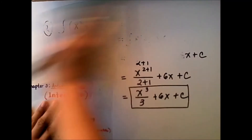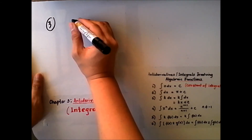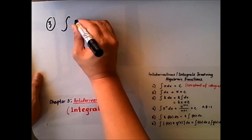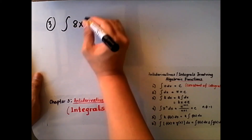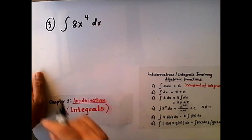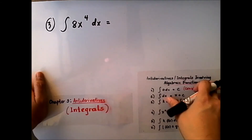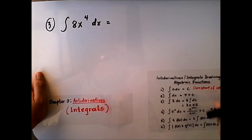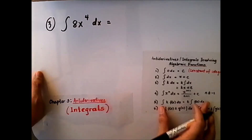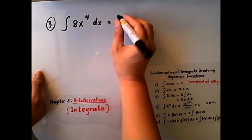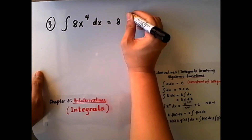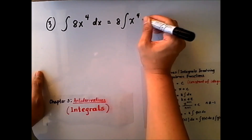Let's have the third example. Here we have the integral of 8x to the 4th dx. We can factor out the constant 8. According to rule number 5, this can be written as 8 times the integral of x to the 4th dx.